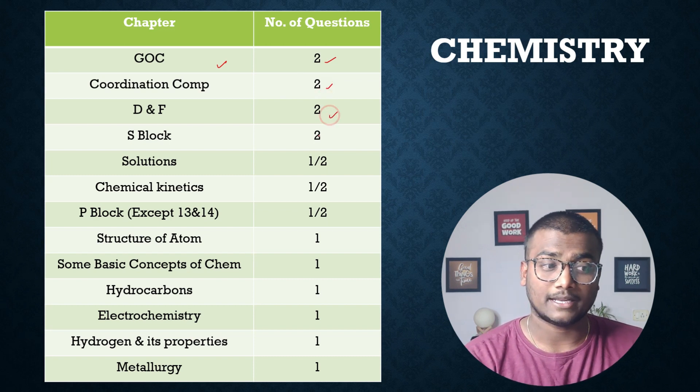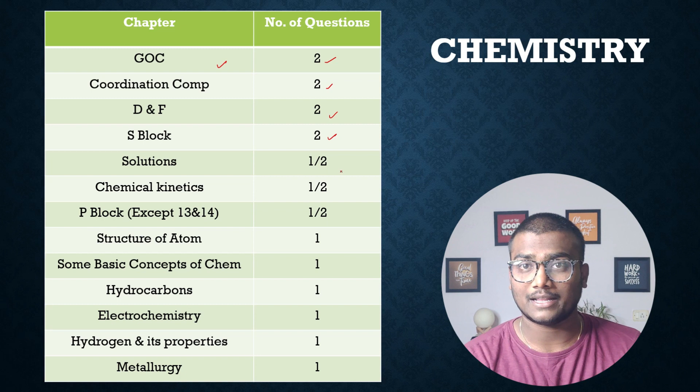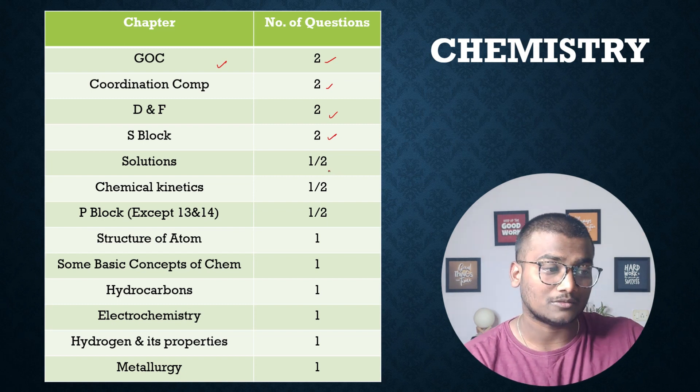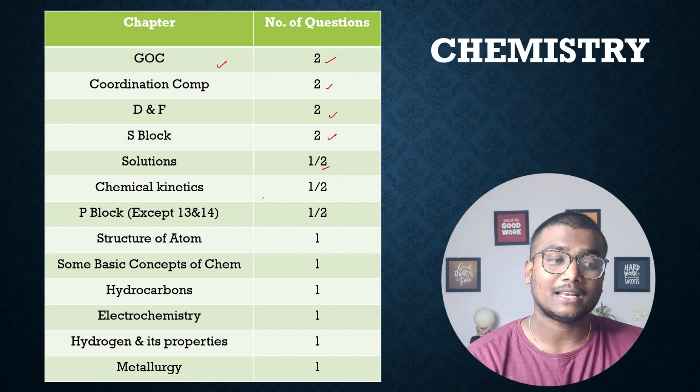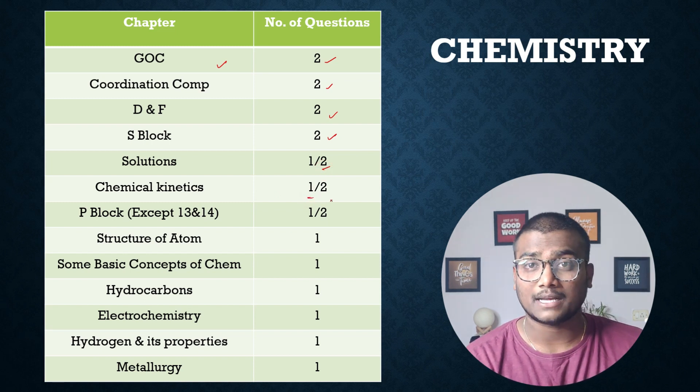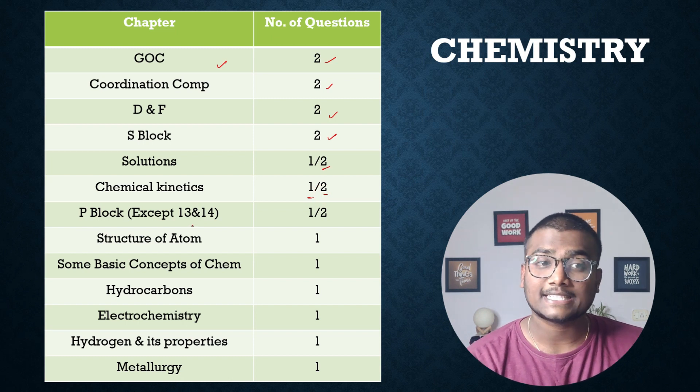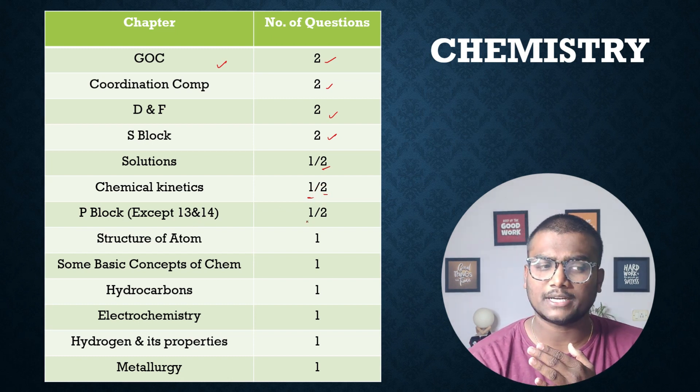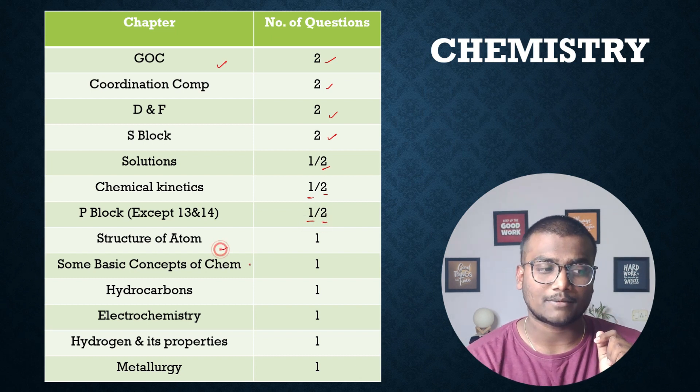Solutions, majority cases one, but you can also expect two questions. Chemical kinetics, majority cases one question, but there might be chances you'll also get two questions here. P block except 13th and 14th, majority chances one question, in some cases two questions. Structure of atom, some basic concepts of chemistry, hydrocarbons, electrochemistry, hydrogen and its properties, and metallurgy, one question each from all these topics.